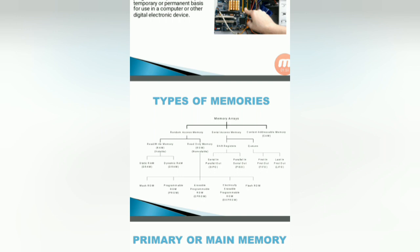Coming into the serial access memory, you can use either shift registers or queue. Queue is divided into two types: first in first out and last in first out type. Shift registers can be serial in parallel out or parallel in serial out.